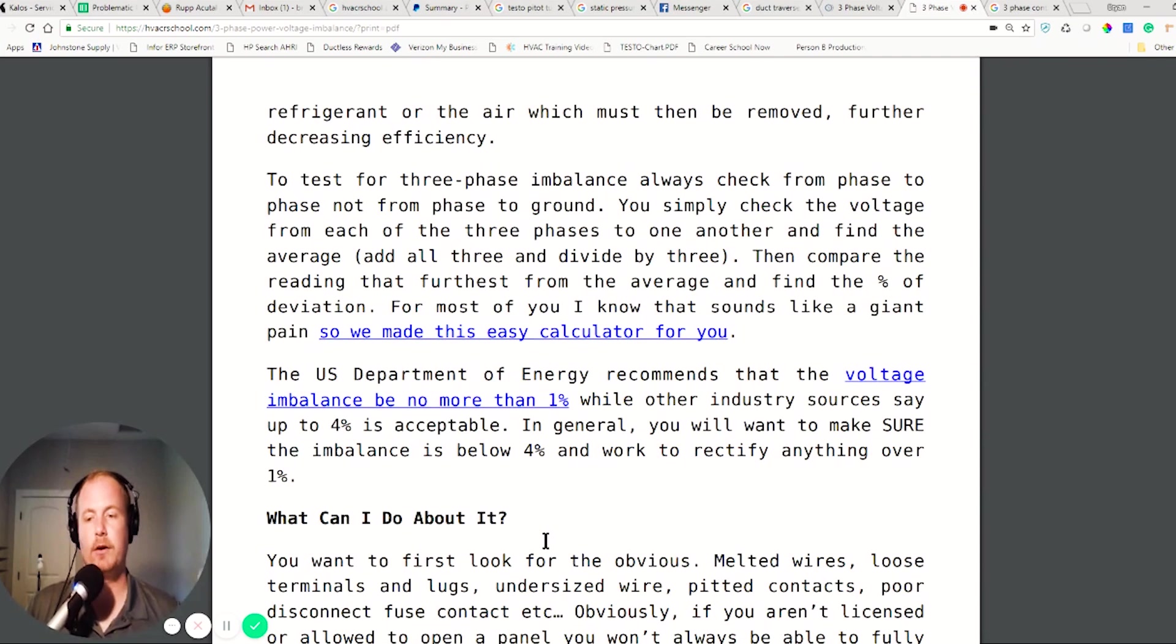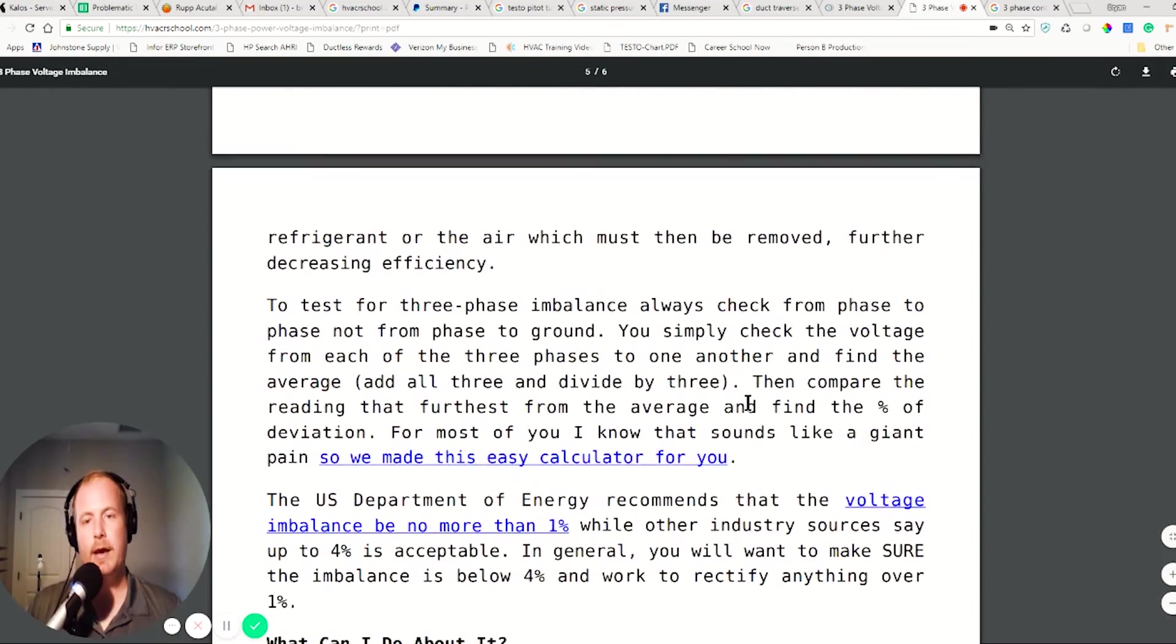Let's say you had 240 volts between phases. That would only be 2.4 volt difference from the average. As soon as I started seeing anything more than that, I would want to start looking into it.